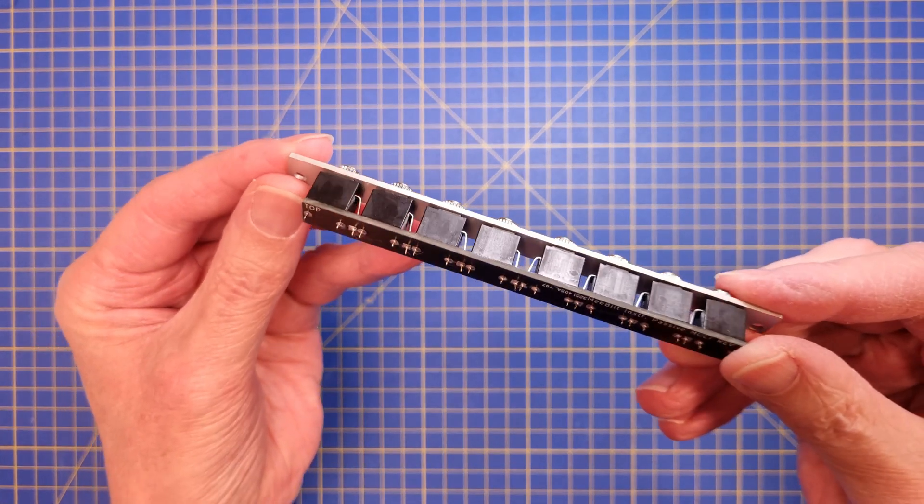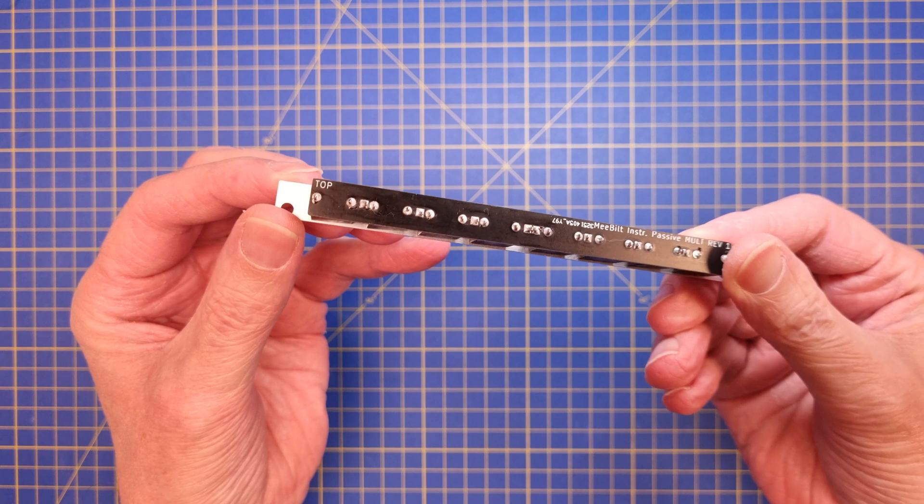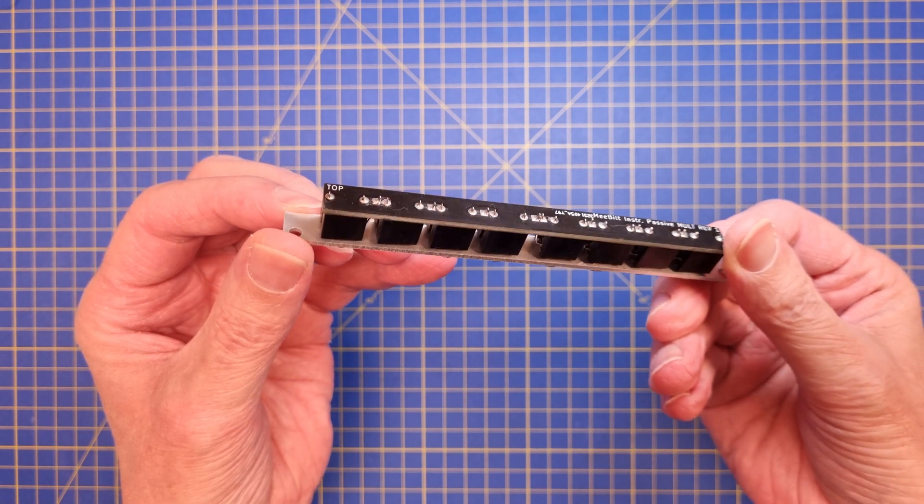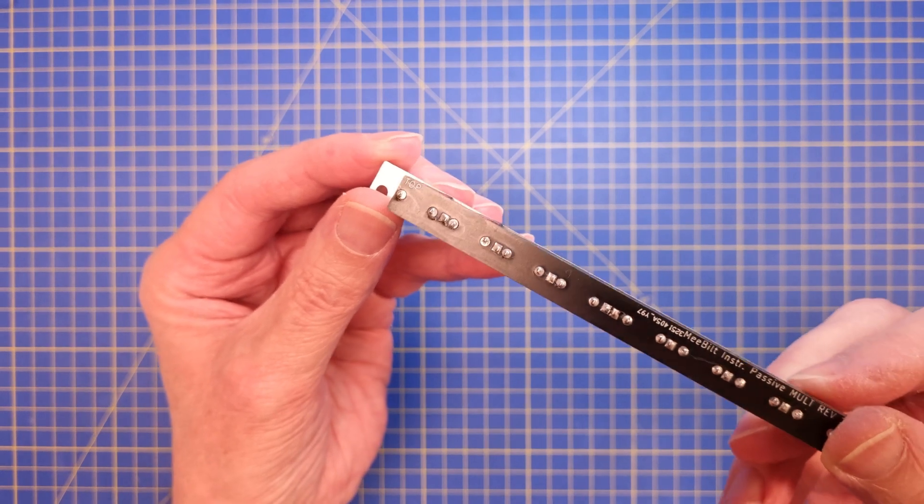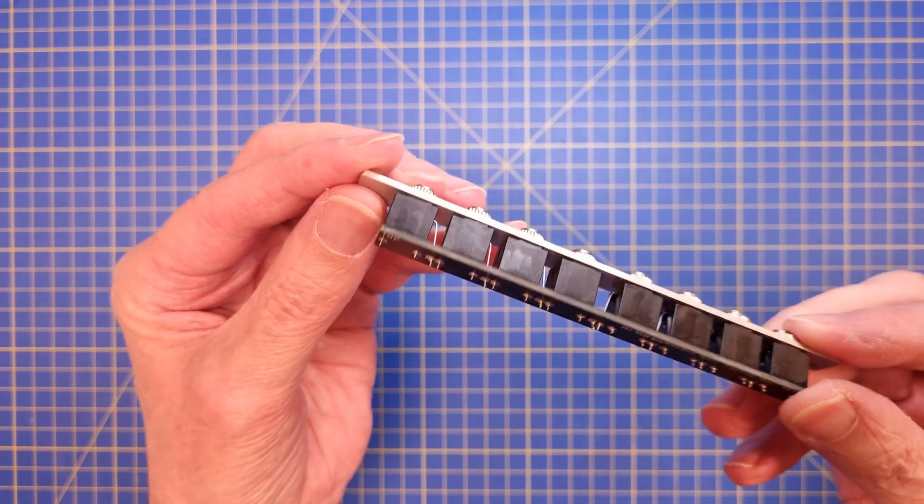The passive mult is one of the simplest modules to build but it is very useful in your modular system and it does not require any power to operate. It's a great module to start with if you are new to DIYing modules.